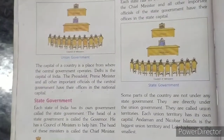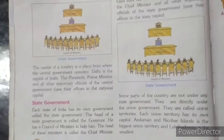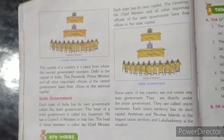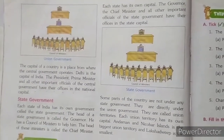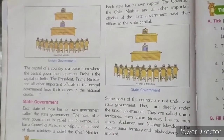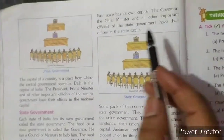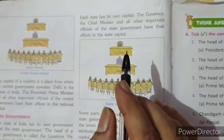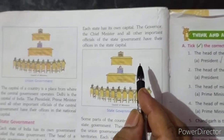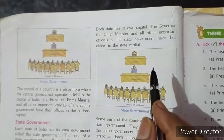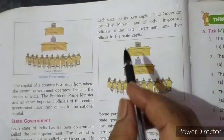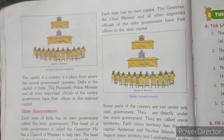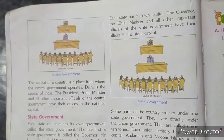He has a council of ministers to help him. The head of these ministers is called the Chief Minister. The Governor, the Chief Minister and all other important officials of the State Government have their offices in the State Capital.